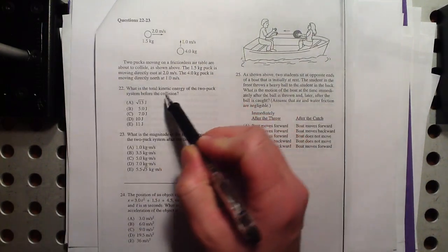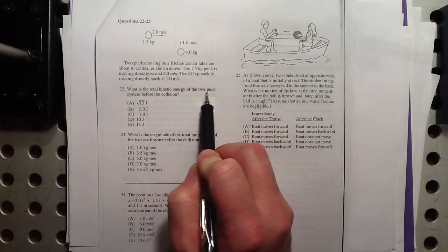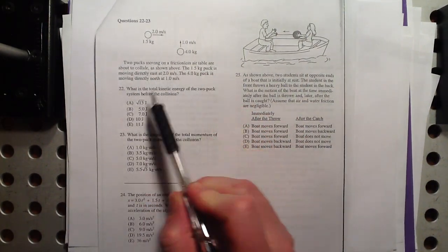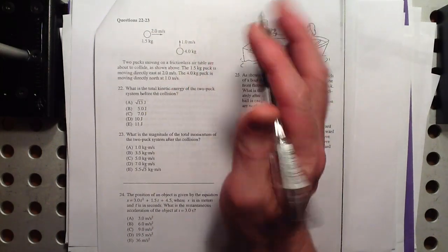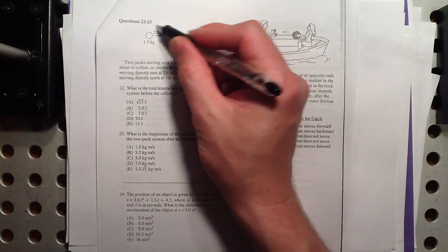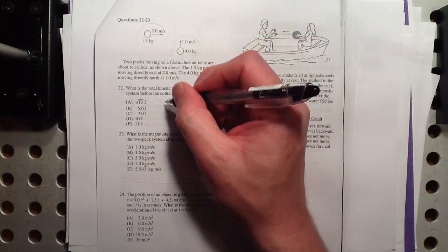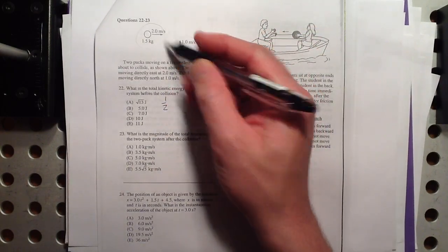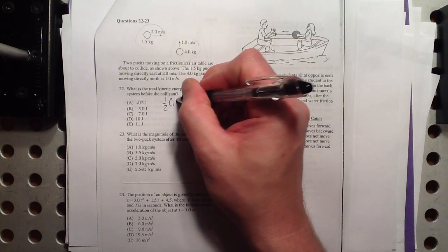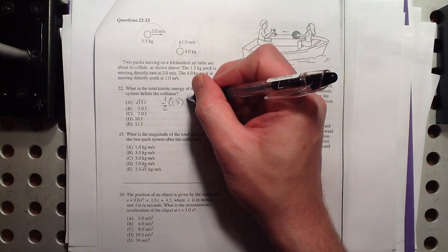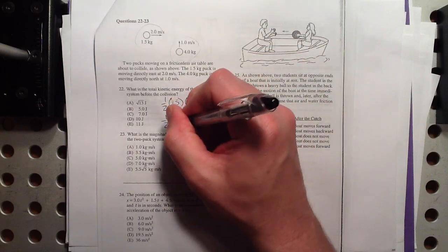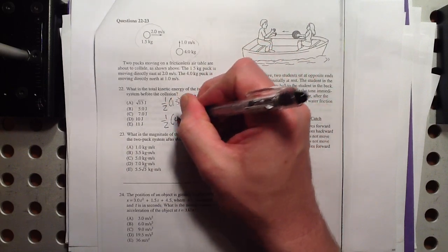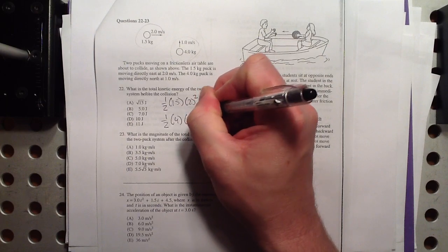Number 22, what's the total kinetic energy of this two-puck system before the collision? Well, let's see. Energy doesn't have any direction, so we just have to find this energy and add this energy. So that's one-half mv squared plus one-half mv squared.